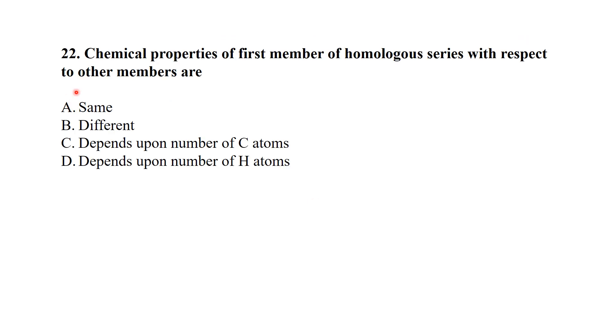Question number 22: the chemical properties of the first member of a homologous series with respect to the other members are always the same.